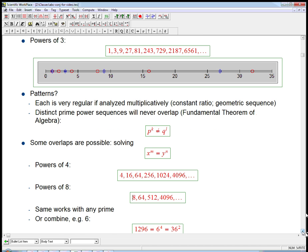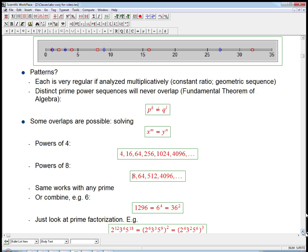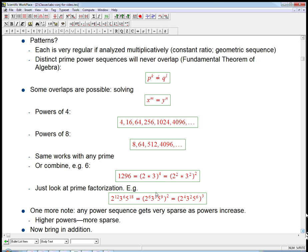You can also combine things. It doesn't have to be a prime power. So, for example, 1296 is 6 to the 4th, which is, if you wanted to break that out, it's 2 times 3 to the 4th. But it's also 2 squared times 3 squared squared, so that's something that's a 4th power and a perfect square. Really, to figure it out, it's not very complicated. You just look at the prime factorization.